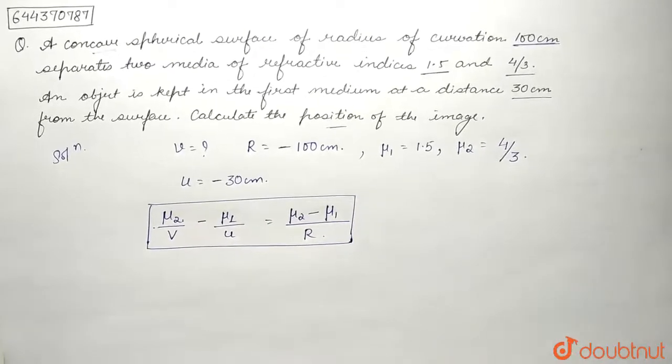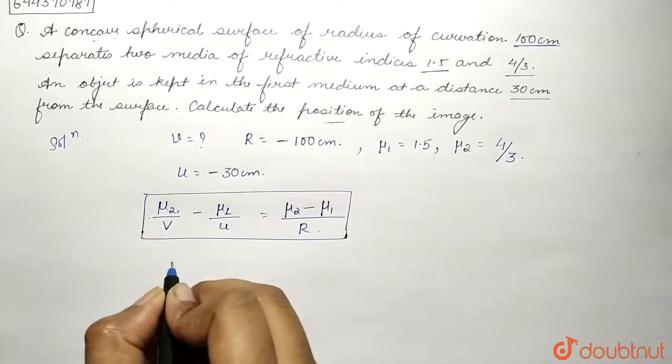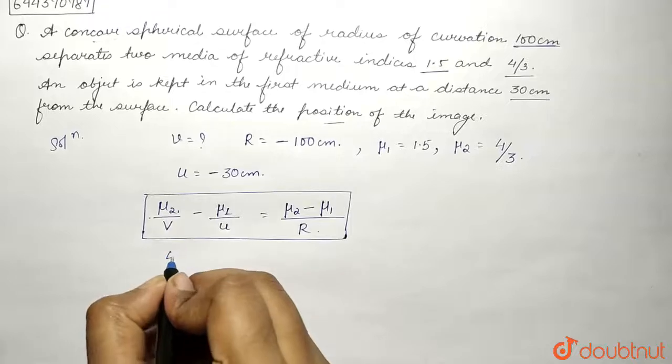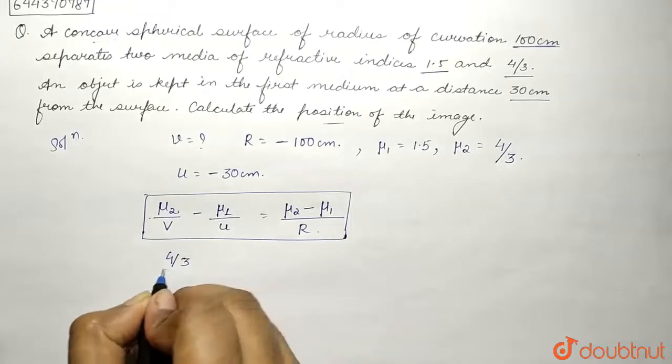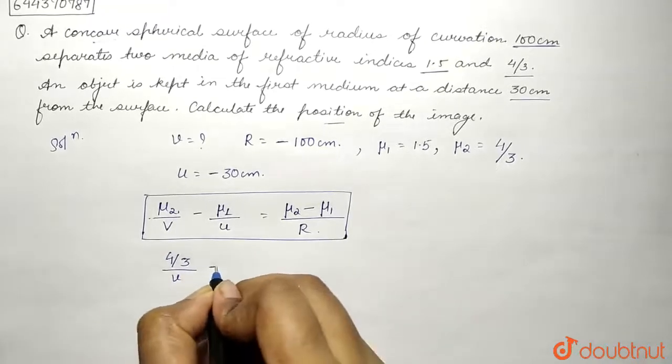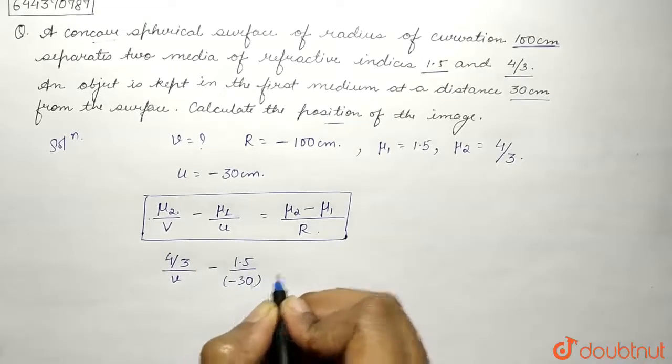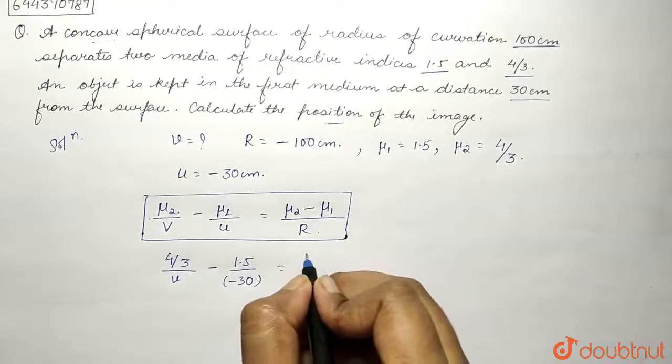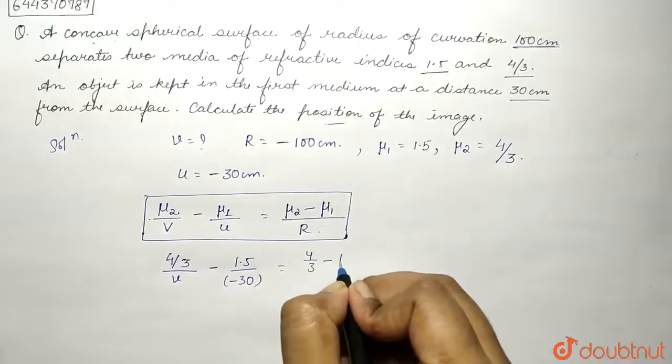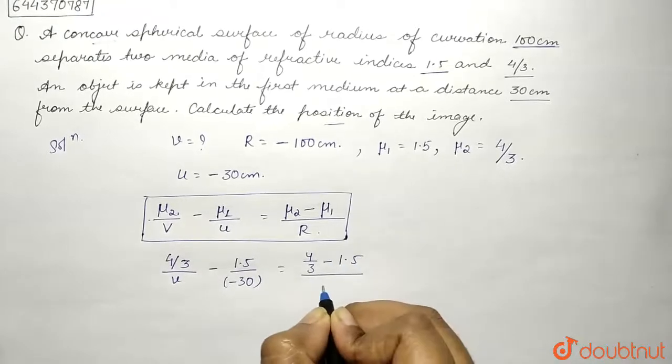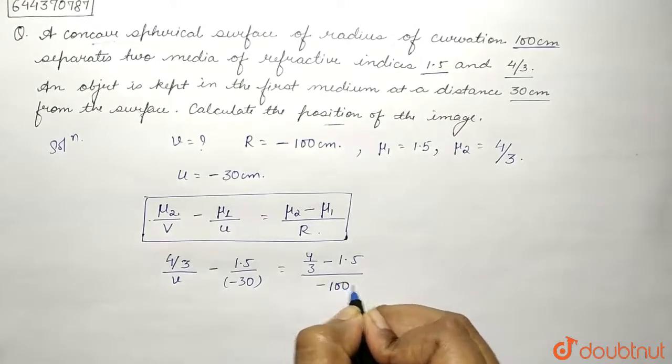μ₂ is 4/3, so 4/3 upon v minus 1.5 upon -30 equals 4/3 minus 1.5 upon R which equals -100.